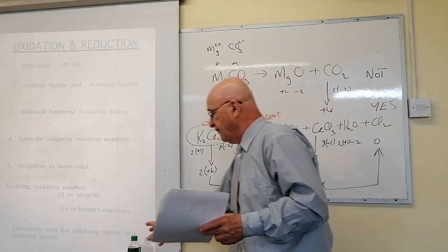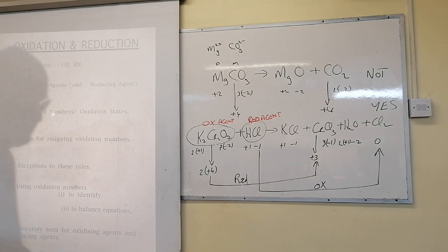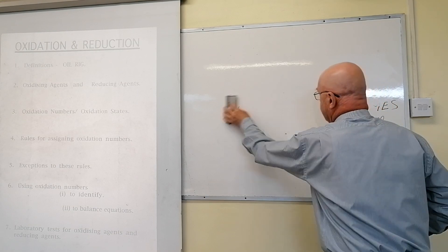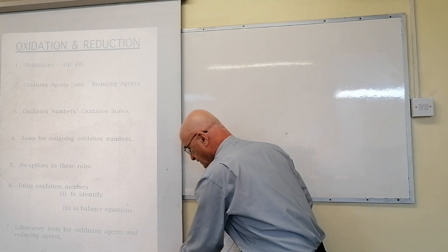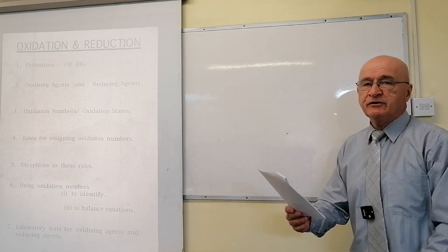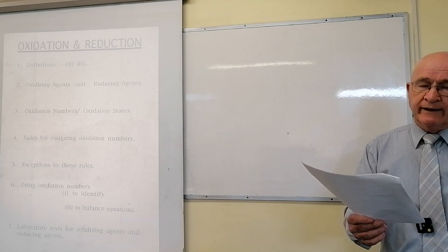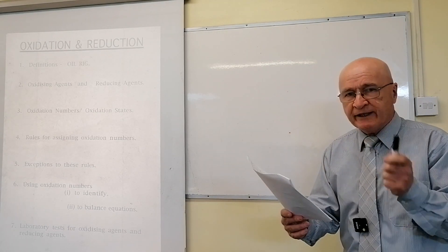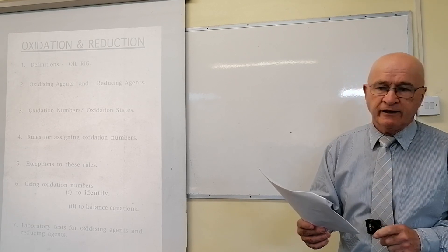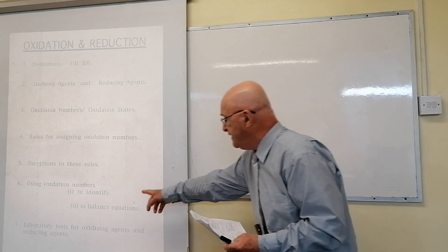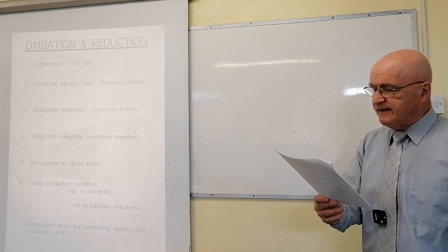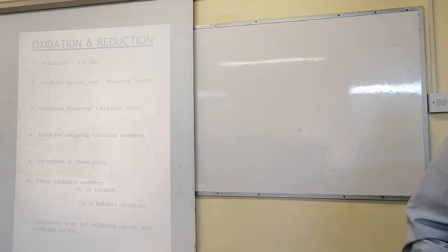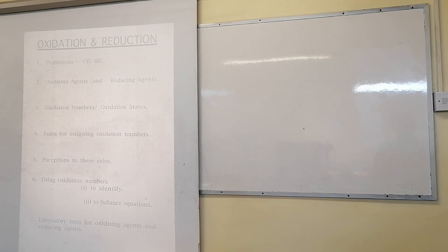The second, more demanding and more popular use in the Leaving Cert is to balance a chemical equation using oxidation numbers. I have three equations in the notes and they get progressively more difficult. Step one: assign oxidation numbers to everything. I'll write the first equation in red and put the oxidation numbers in black.